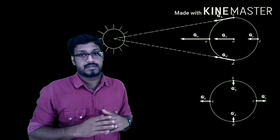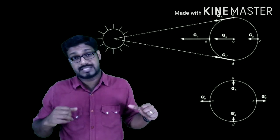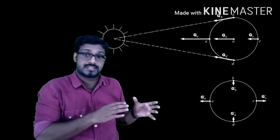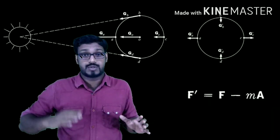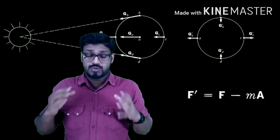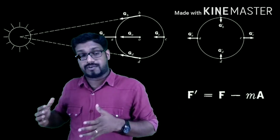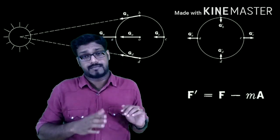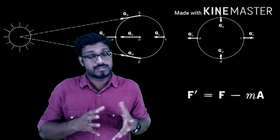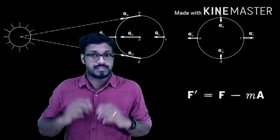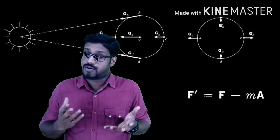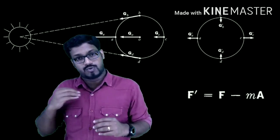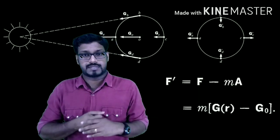We can take another coordinate system attached to the center of Earth, but this coordinate system is accelerating towards the Sun with acceleration g₀. We have learned that the laws of physics have the same form in an inertial system and a non-inertial system which is accelerating with a constant acceleration, provided you introduce the fictitious force to each and every particle. So if F is the force on a point observed from the Sun's frame and F' is the force observed from Earth's frame, then F' = F + F_fictitious. The fictitious force has the form F_fictitious = −ma, where a is the acceleration of the coordinate system. In our case the acceleration is g₀, so F' = F − m·g₀.